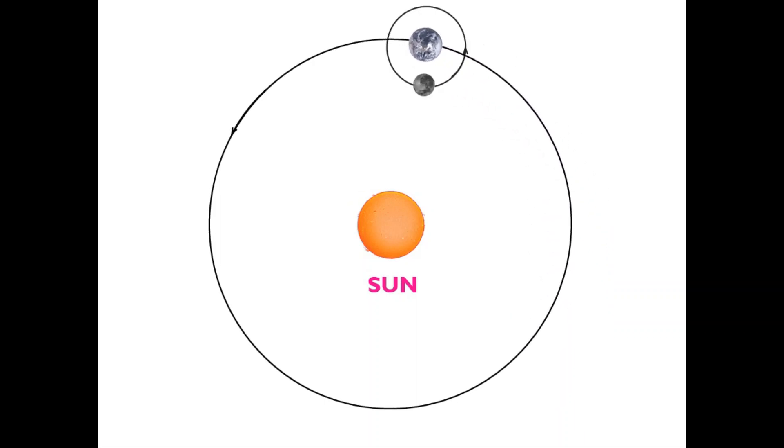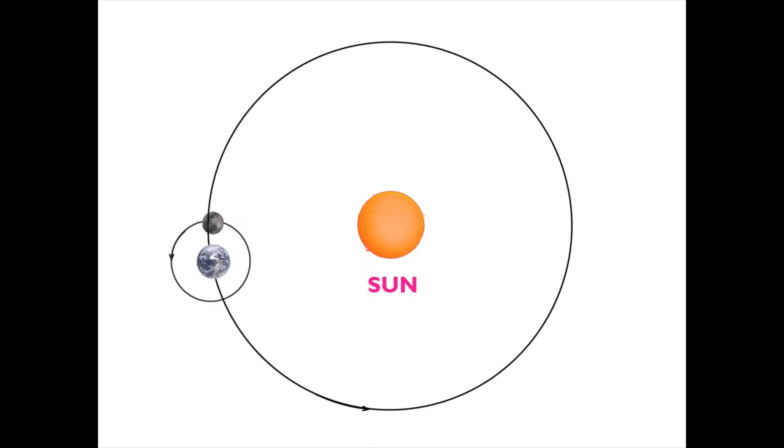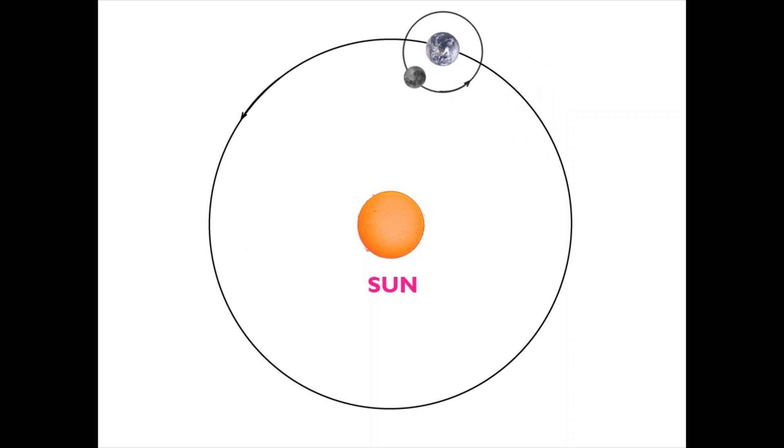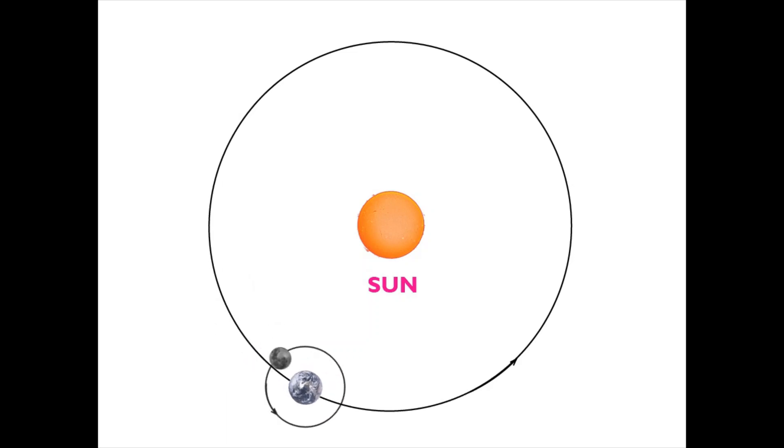The mean velocity of the orbit is 29.78 km per second. The orbital diagrams of the Moon around the Earth could give the impression that the Moon orbits Earth in such a way that sometimes it goes backwards when viewed from the Sun's perspective.